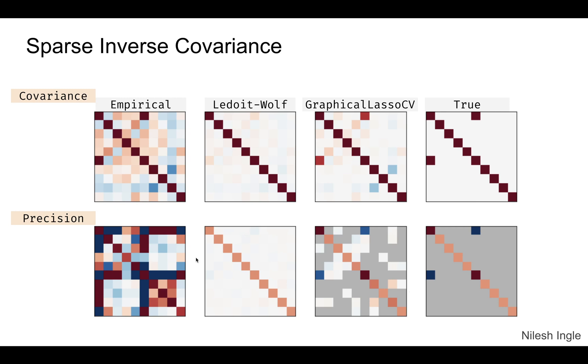Whereas graphical lasso CV is closer to the true values of the covariance matrix. Similar is the case with the precision matrix where the Ledoit-Wolf seems to preserve the diagonal nature of the covariance matrix and loses the values for the off diagonal elements.